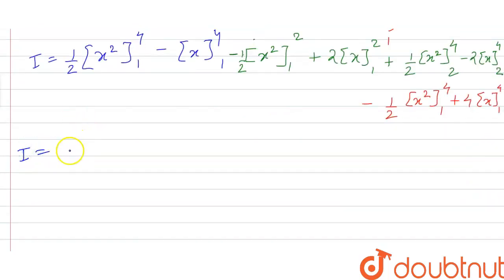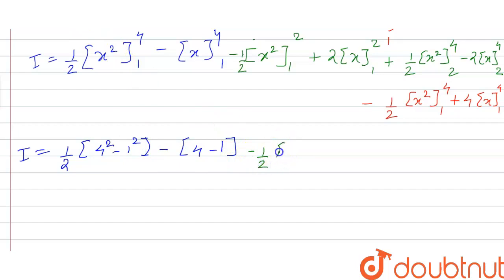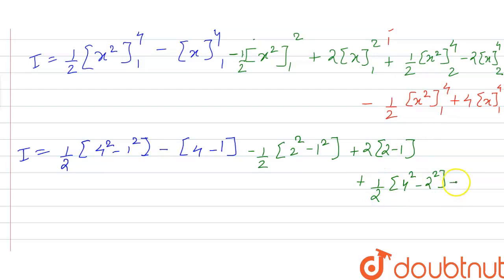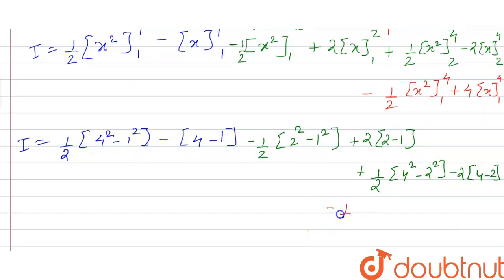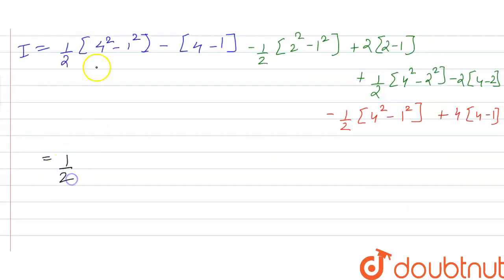So I equals (1/2)(4 squared minus 1 squared), minus (2 squared minus 1 squared), plus 2 times (2 minus 1), plus (1/2)(4 squared minus 2 squared), minus 2 times (4 minus 2), minus (1/2)(4 squared minus 1 squared), plus 4 times (4 minus 1).